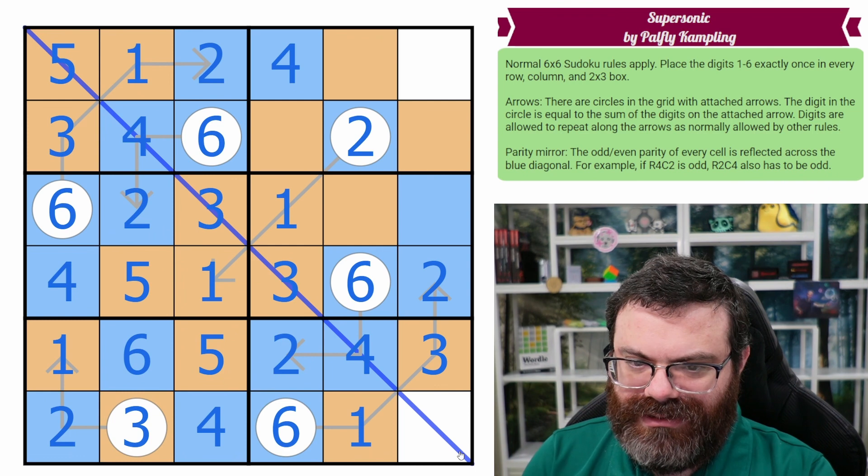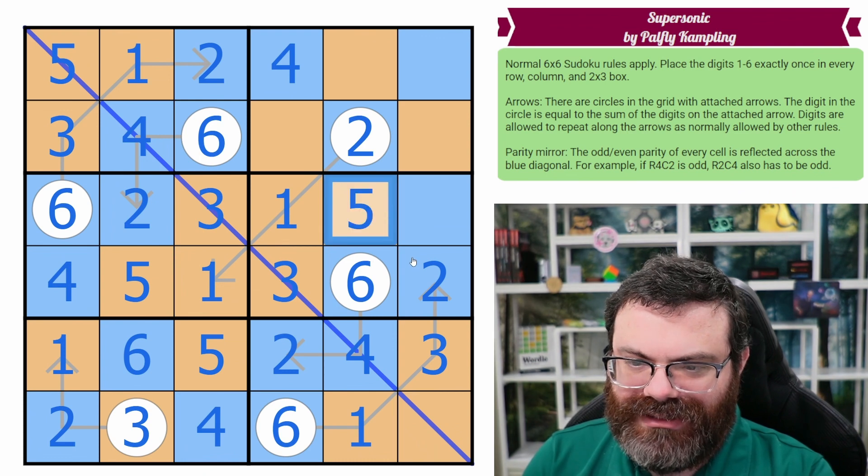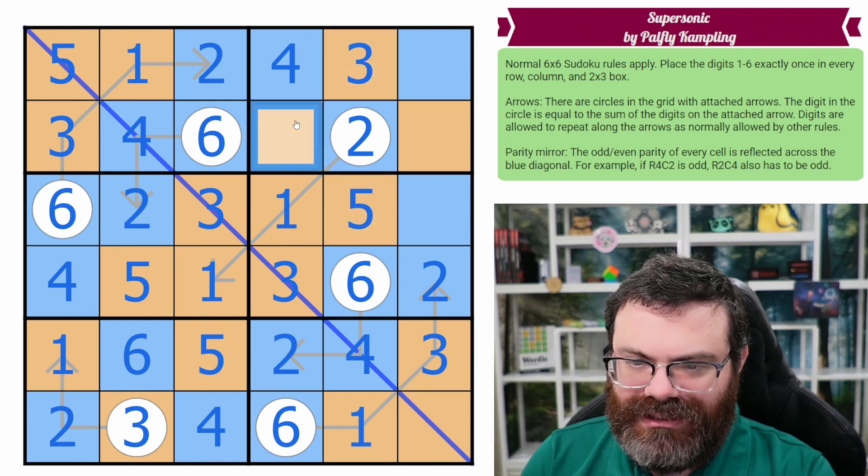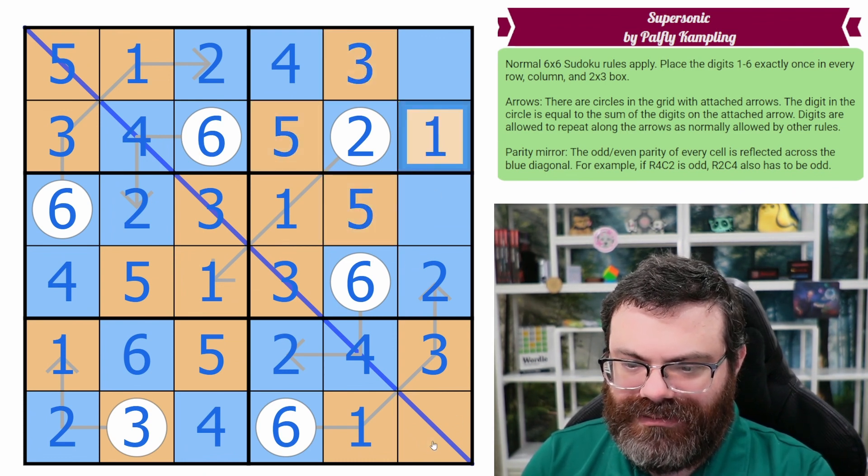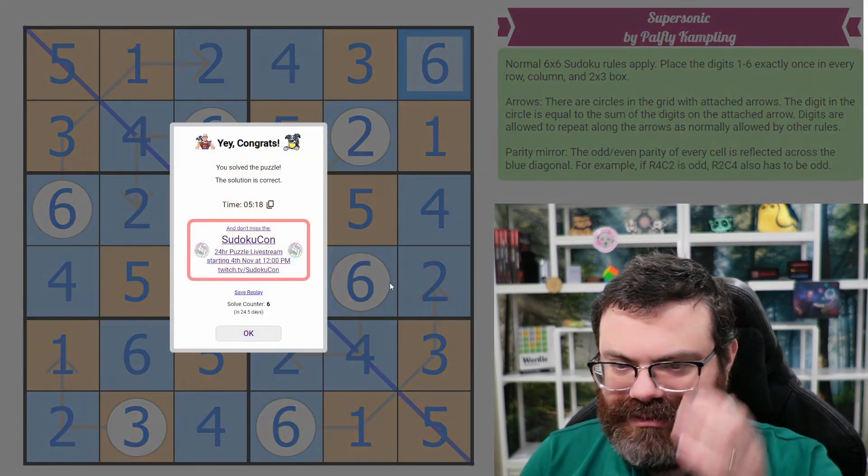These are all even. This is even. This is odd. Okay. There we go. Coloring is done. That's a five. That's a three. That's a five. That's a one. That's a five. That's a four. And that's a six. Nice.